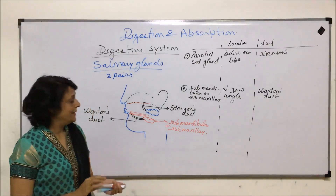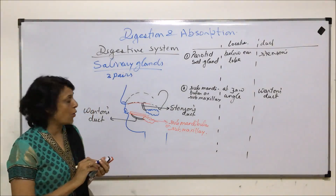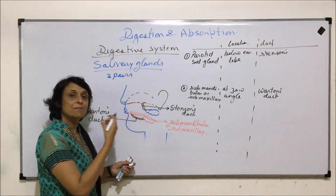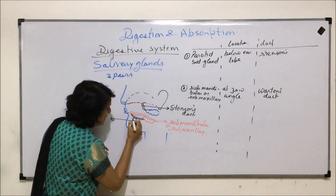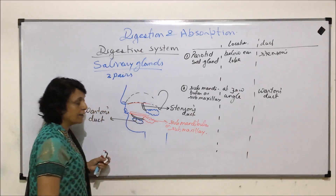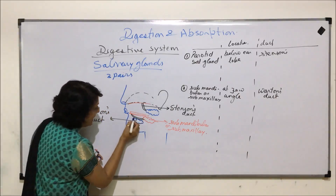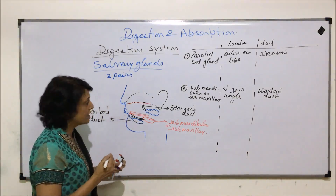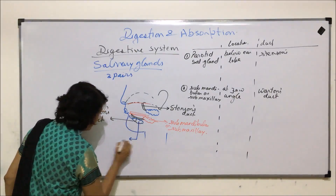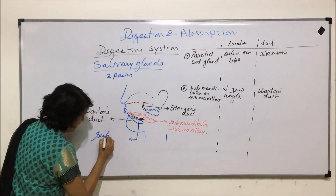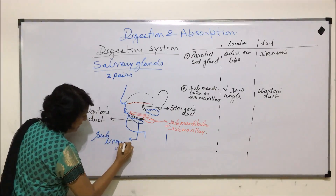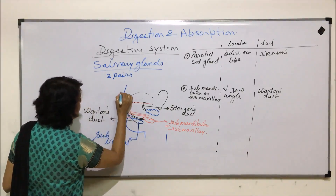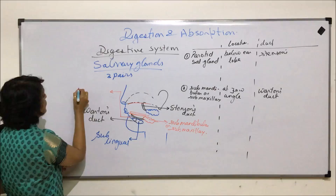The third gland is called sublingual, and as the name tells us, it is beneath the tongue. This third gland is here beneath the tongue, and its opening is also in the buccal cavity just beneath the tongue. The duct with which it pours its secretion is known as...